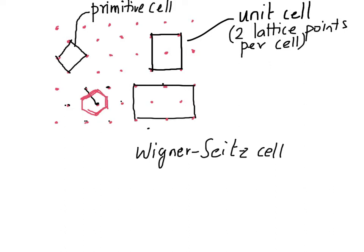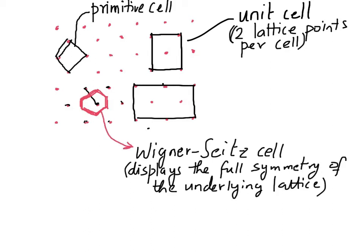So this hexagon is essentially the Wigner-Seitz cell for this chosen two-dimensional lattice. The Wigner-Seitz cell, as I mentioned, is the most spherical primitive cell you can imagine for a given lattice. And interestingly, it also displays the full symmetry of the underlying lattice. In this particular case, it is the hexagonal symmetry that is revealed by the construction of this Wigner-Seitz cell.